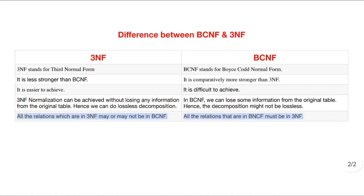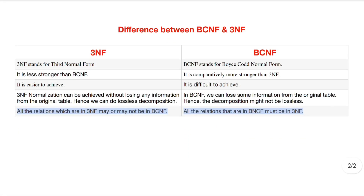Today's topic is the difference between BCNF and 3rd NF. 3rd NF stands for Third Normal Form and BCNF stands for Boyce-Codd Normal Form. 3rd NF is less stronger than BCNF, and BCNF is more stronger than 3rd NF.